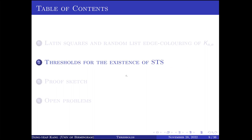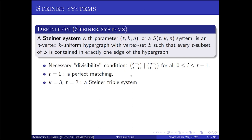Before talking about the threshold for Steiner triple systems, let me mention some basic definitions. A Steiner system with parameters t, k, n — or S(t,k,n) — is an n-vertex k-uniform hypergraph with vertex set S such that every t-subset of S is contained in exactly one edge of the hypergraph. In order for an S(t,k,n) system to exist, the following necessary divisibility condition must hold: C(k-i, t-i) must divide C(n-i, t-i) for i ranging from 0 to t-1.